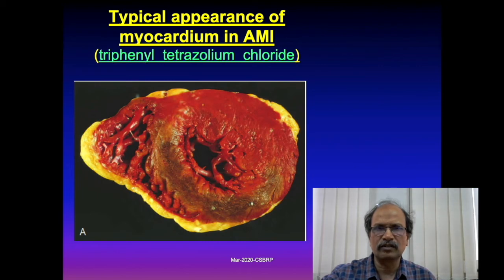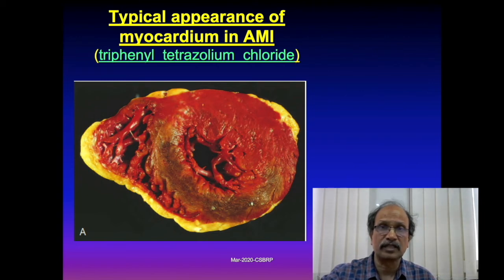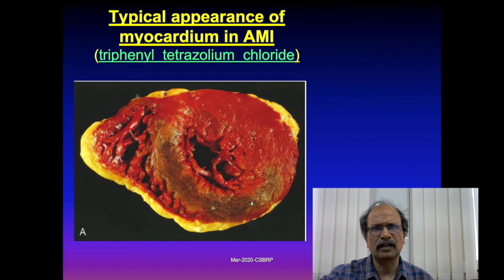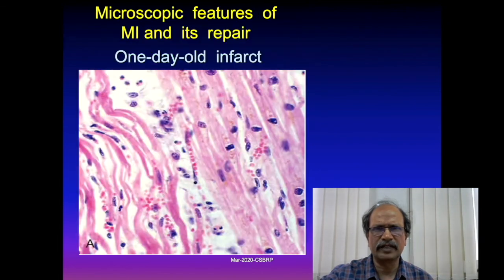Early infarcts not visible by gross or microscopic examination can be detected by applying triphenyltetrazolium chloride (TTC) to the fresh cut surface of the heart muscle. The infarcted area lights up with a brownish color, whereas healthy non-infarcted muscle shows brick-red coloration.